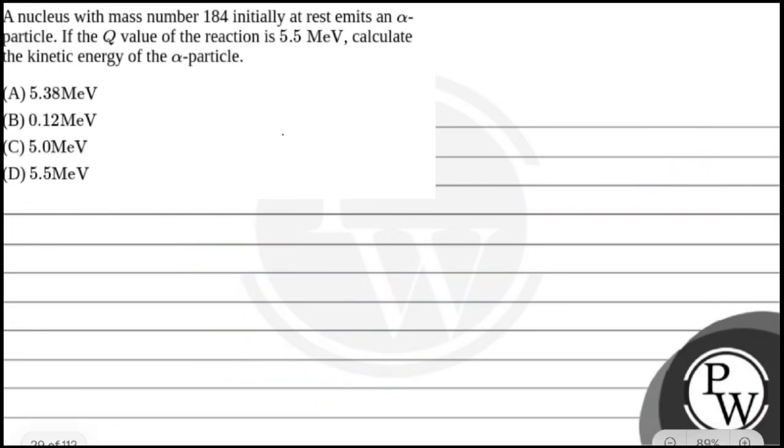The question gives the Q value of the reaction as 5.5 MeV. Q value represents how much energy is released or absorbed in the reaction. Q value is positive at 5.5 MeV, meaning energy is released. The change in energy is E_final - E_initial = 5.5 MeV. Initially, the energy is zero.